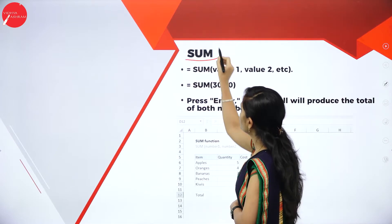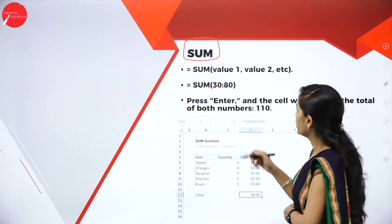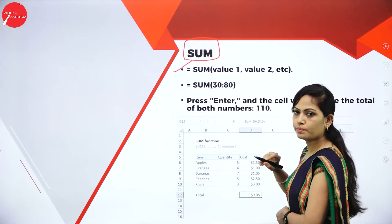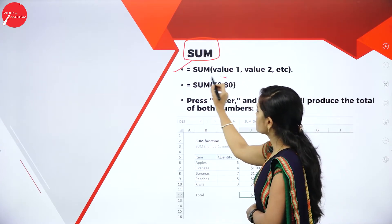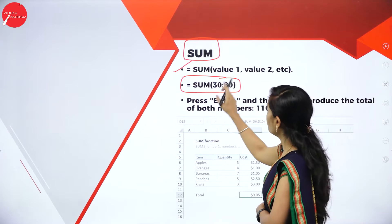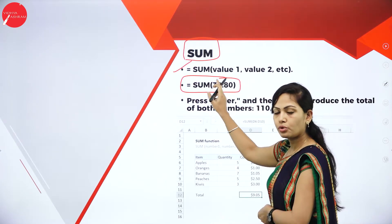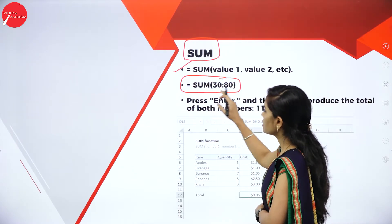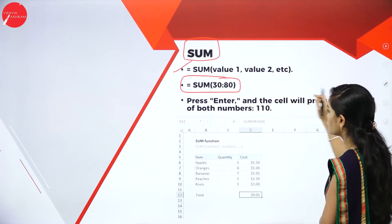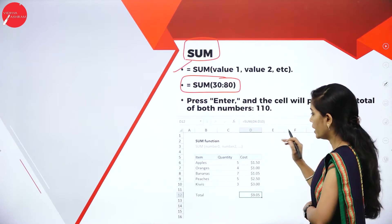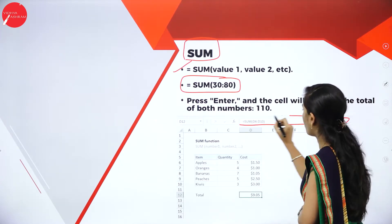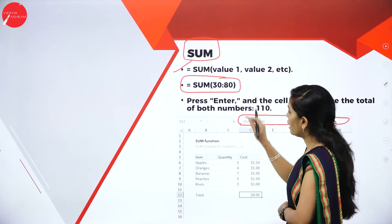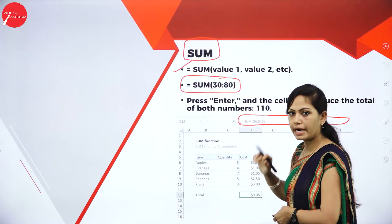If you want to find the sum of two or more numbers, use this syntax: =SUM(value1, value2). Value1 and value2 are your cell address values. For example, if value1 is 30 and value2 is 80, adding them gives 110. After entering the formula, click Enter and the cell will produce the total — 110. This is your formula bar where you type the formula. I have one simple data and will use this syntax to find the addition.